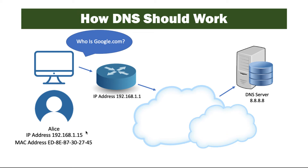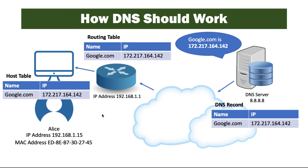Alice's request will go all the way out to that server, and that server will respond with the IP address that Google.com is using. This is important because traffic can't be routed across the Internet based on the human-readable name, or Google.com — it has to have the IP address. So in this case, the DNS server will look in its record and say Google.com is 172.217.164.142, and it will send that information back to the system that requested it. The router will update its routing table, the local DNS server will be updated as well, and on Alice's computer the host table will be updated with the correct address. This way, the next time Alice looks for Google.com, the computer can check its local host table and not go through all that process again.